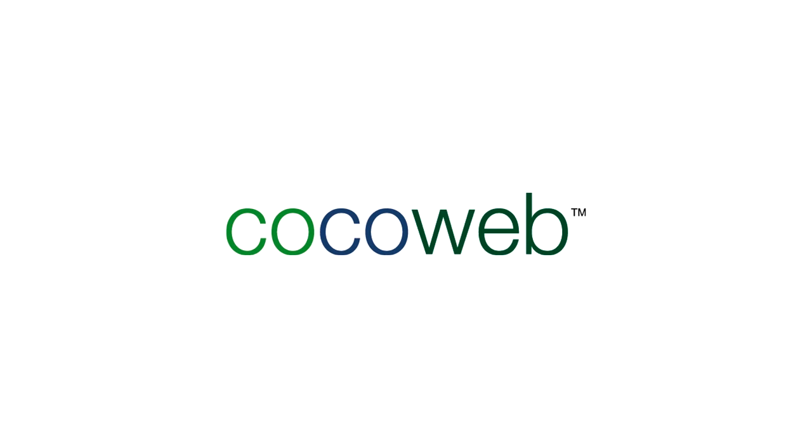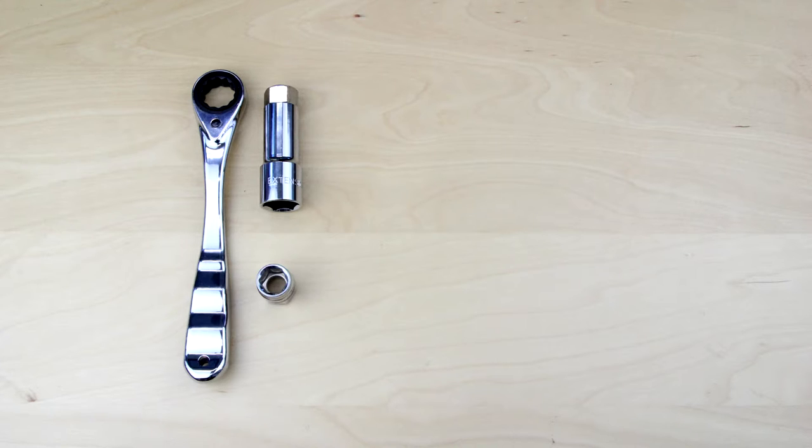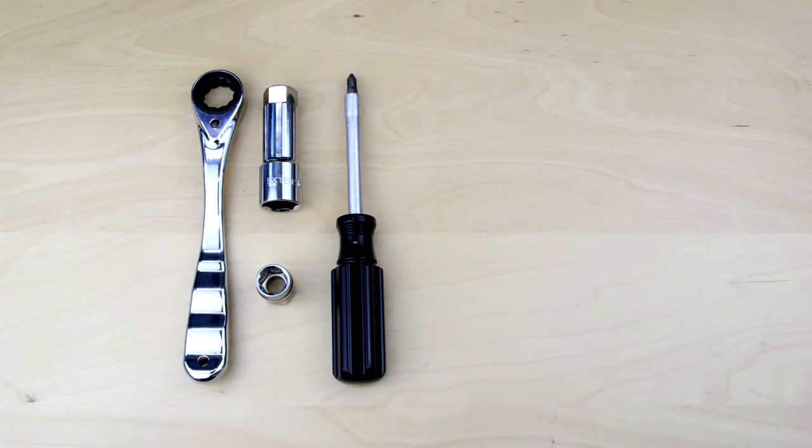Today we're going to show you how to replace an LED array on a barn light. The tools we'll be using today will be a crescent wrench, an extender adapter is preferred, a 9/16 socket, a Phillips screwdriver, and pliers.